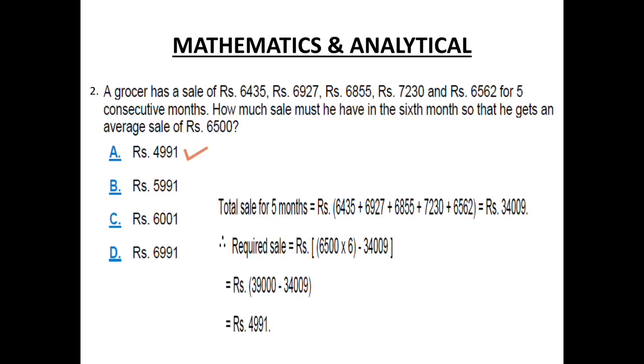The correct answer is Rs. 4991. If you know the basic formula of average, we are just going to substitute the values. Now we have the total sale for 5 months. We will add up the total sale of 5 months which is equal to Rs. 34009.